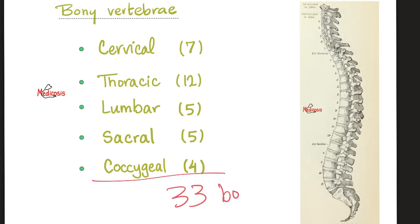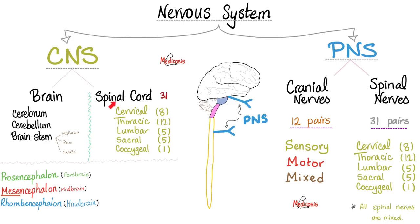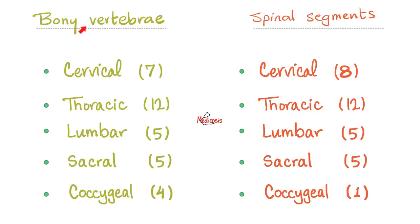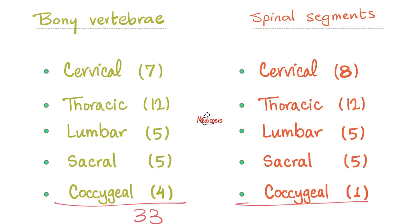But the spinal cord segments are different from the vertebrae count. Instead of seven cervical bony vertebrae, we have eight cervical spinal segments. Twelve thoracic is the same, five lumbar the same, five sacral the same, but only one coccygeal instead of four. Adding these up: 8 plus 12 is 20, plus 10 is 30, plus 1 is 31. So we have 33 bones but 31 spinal segments and therefore 31 pairs of spinal nerves.